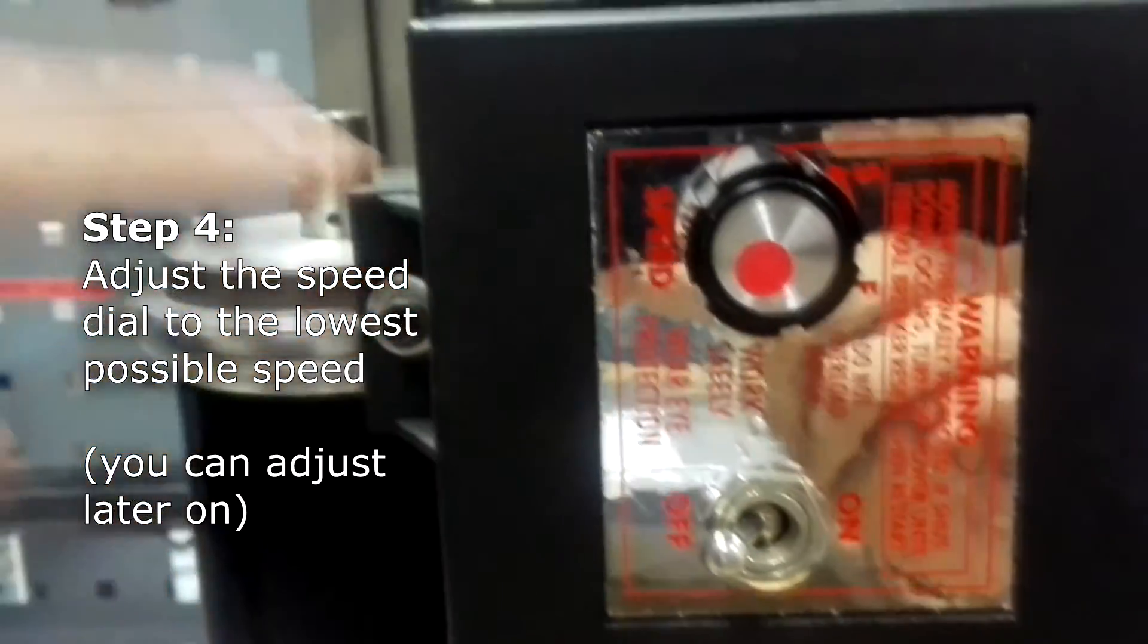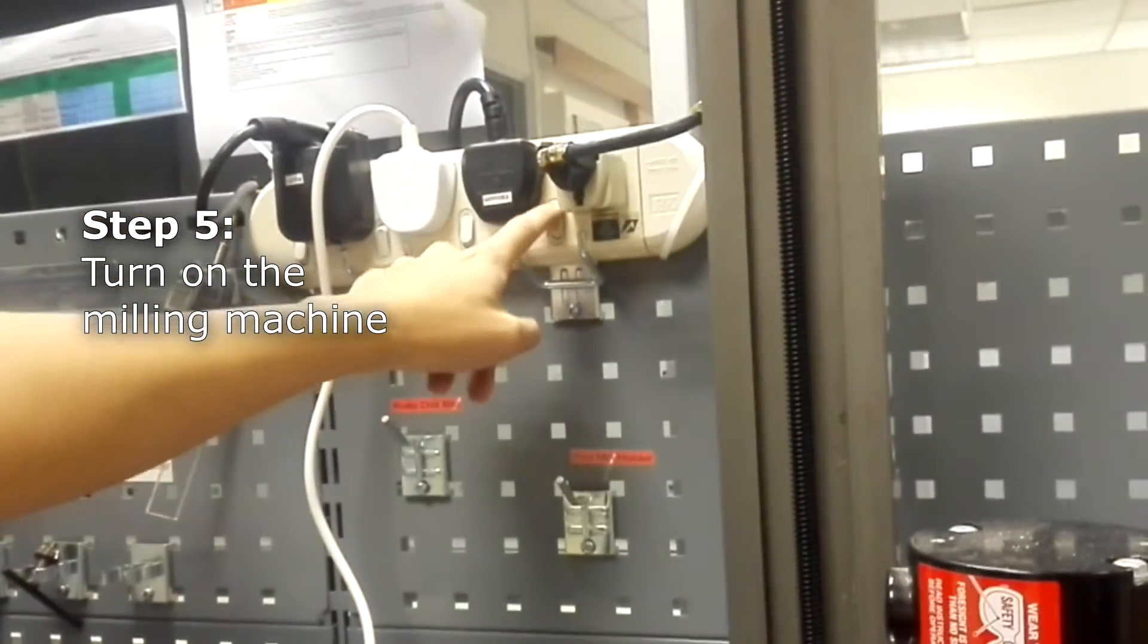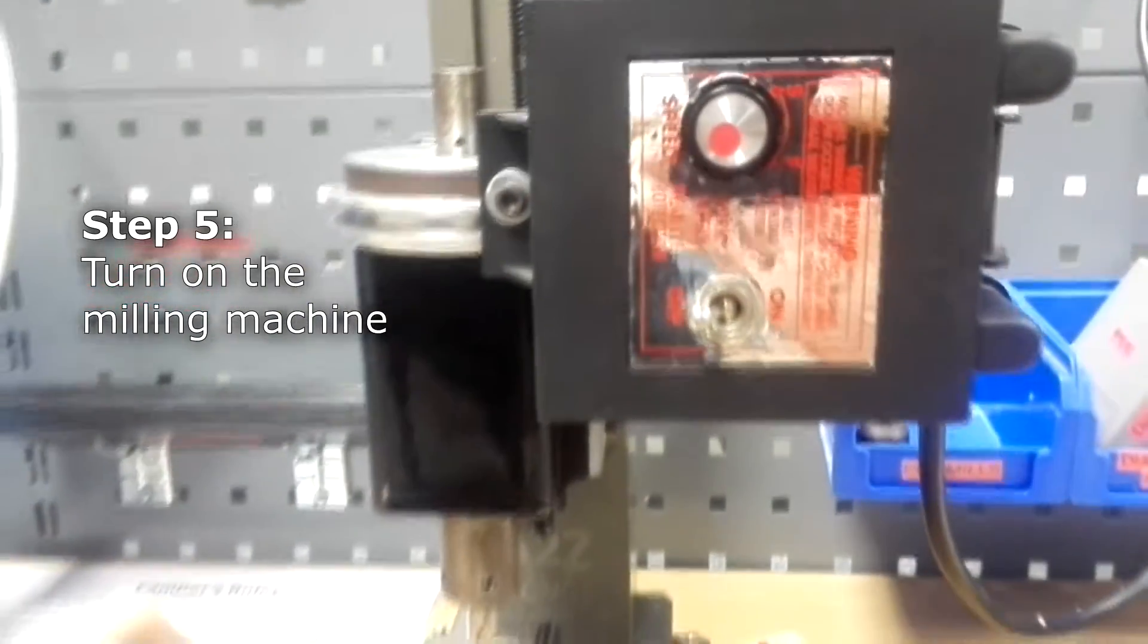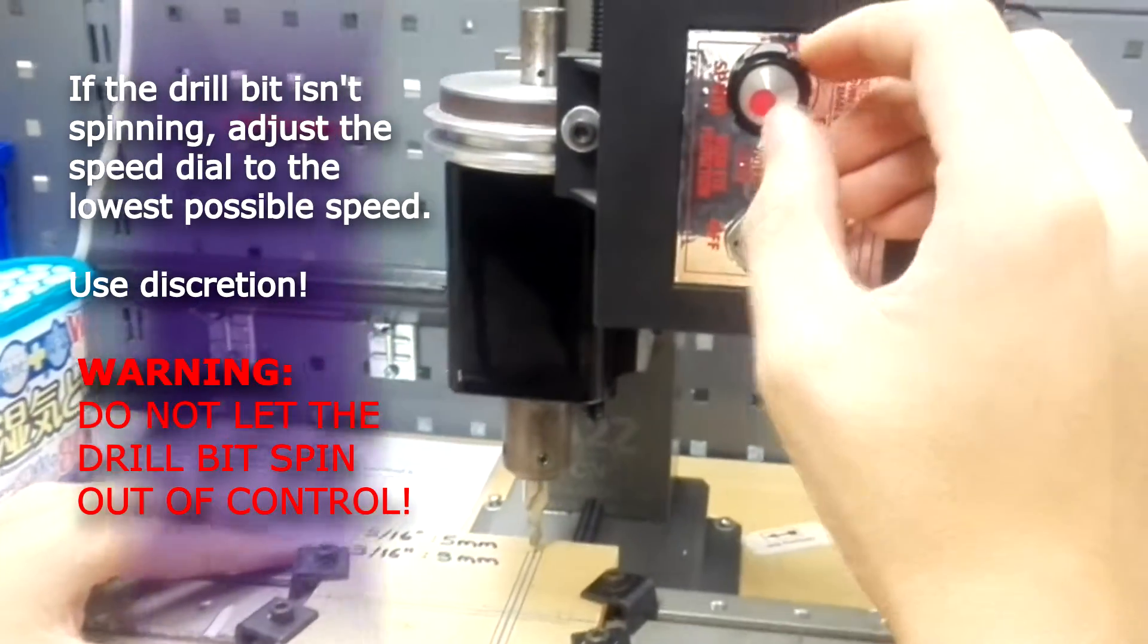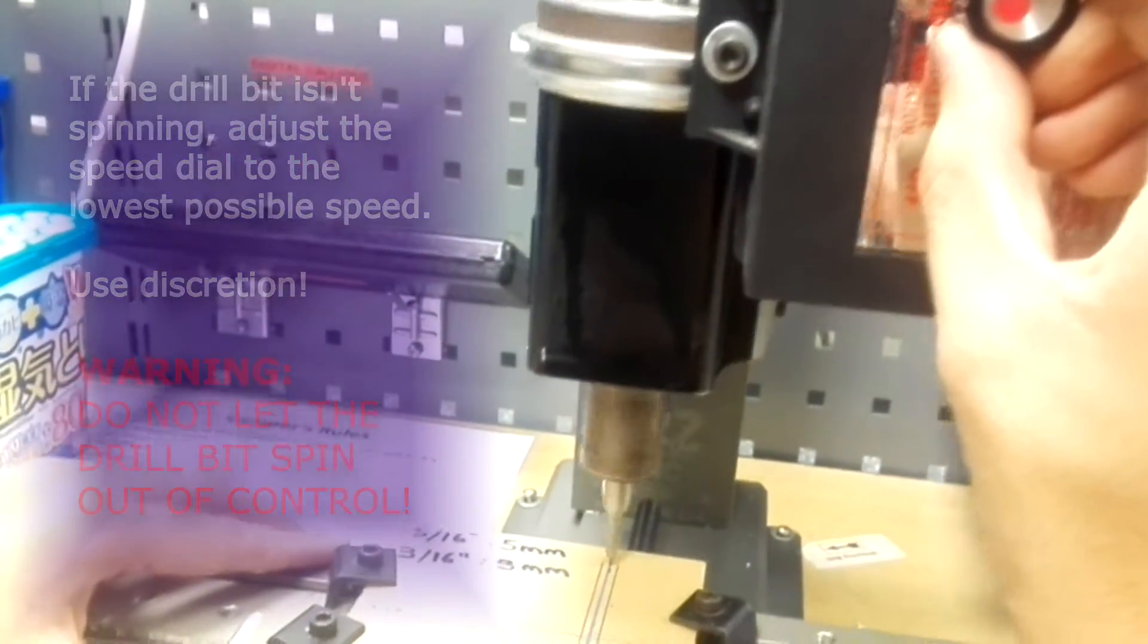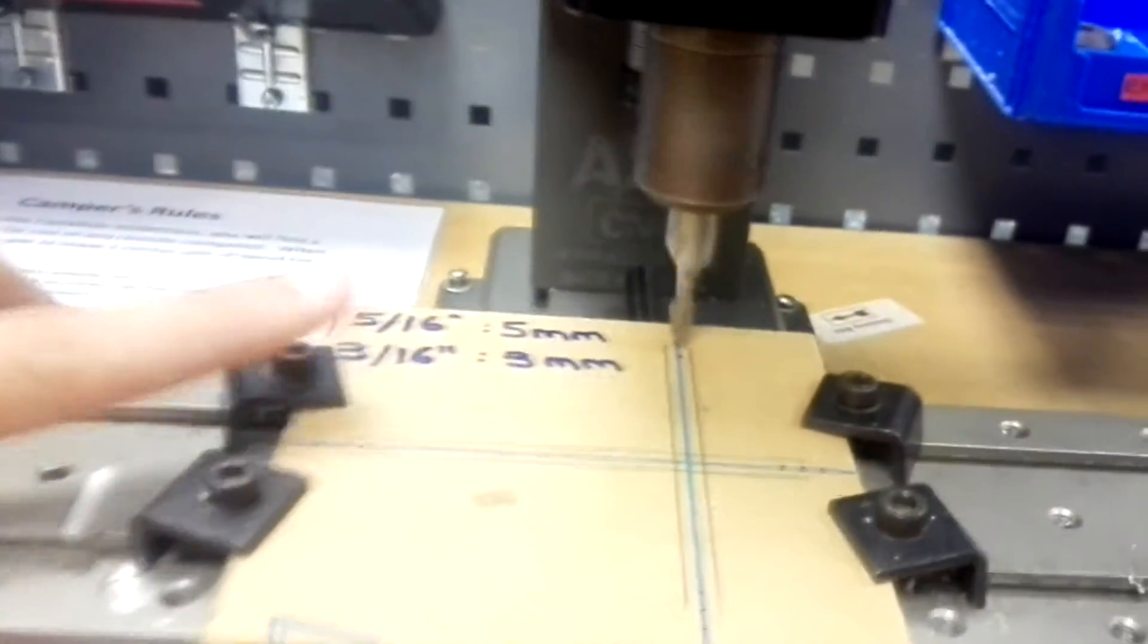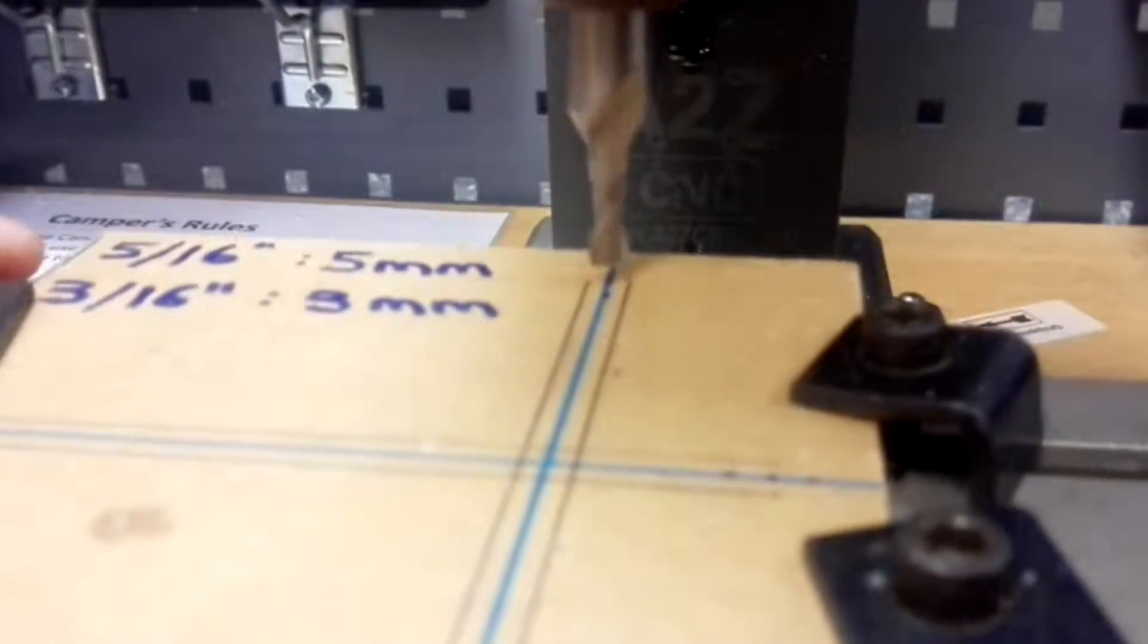Now let us turn the milling machine on. Its main switch is located over here. And notice when you turn it on that your drill bit should not be spinning out of control. If it doesn't move, that means your speed limit needs a little adjustment. You want it to be at a slow revolving speed so that you can position and calibrate your starting point on your workpiece.